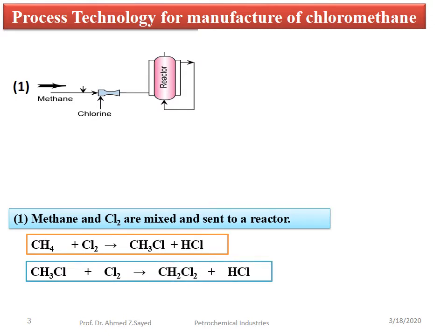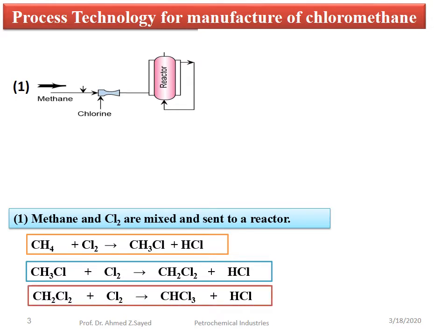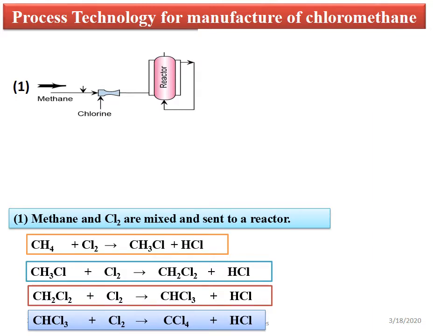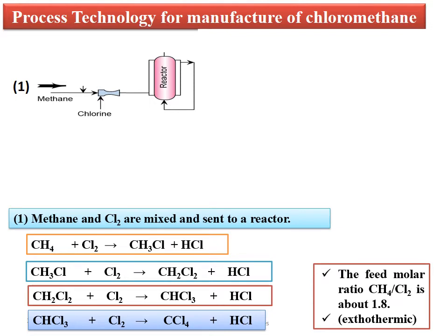Methyl chloride plus excessive chlorine gas gives methylene dichloride and hydrochloric acid. Methylene dichloride plus excessive chlorine gas gives chloroform and hydrochloric acid. Chloroform plus excessive chlorine gas gives carbon tetrachloride and hydrochloric acid. The feed molar ratio of methane to chlorine gas is about 1.8. This reaction is exothermic.